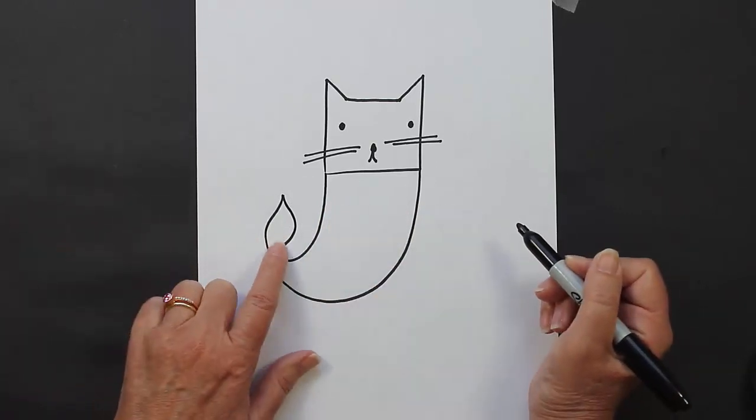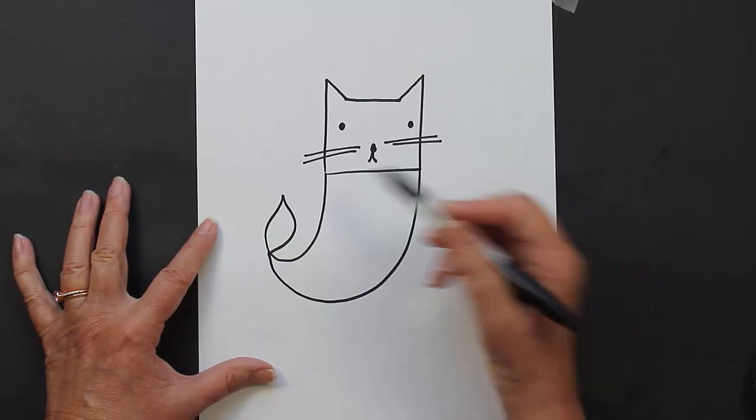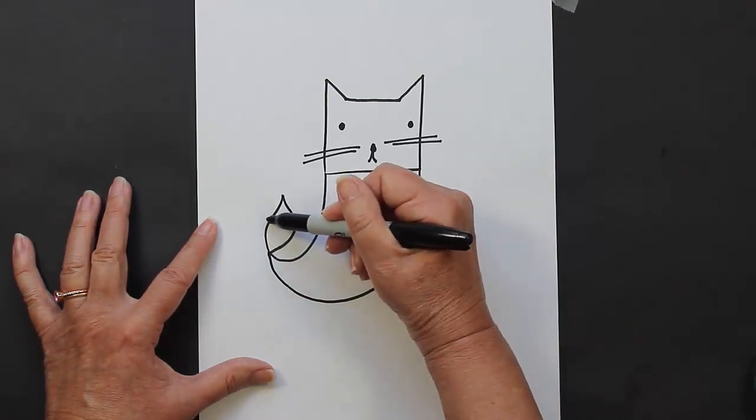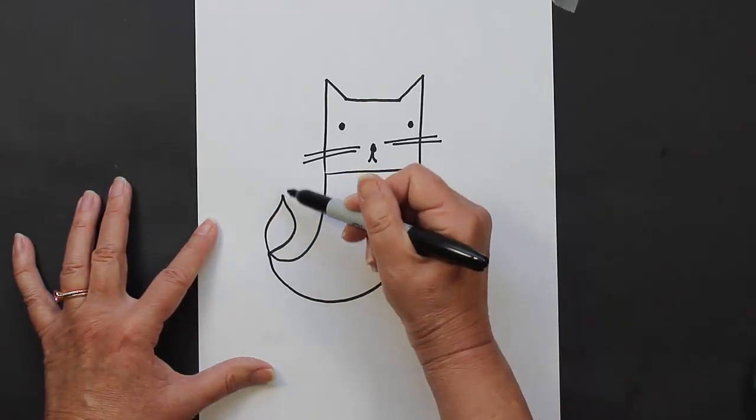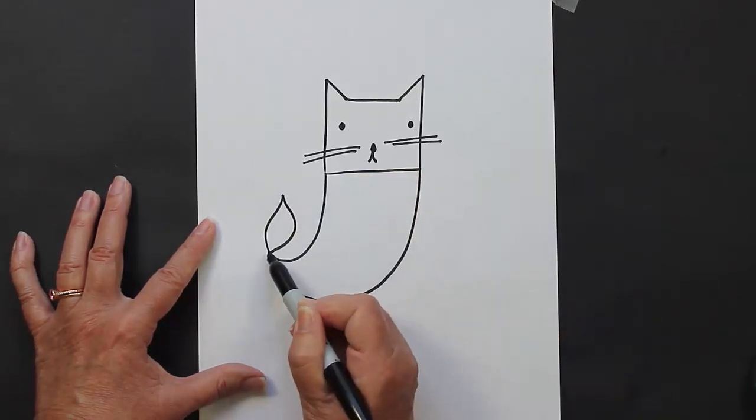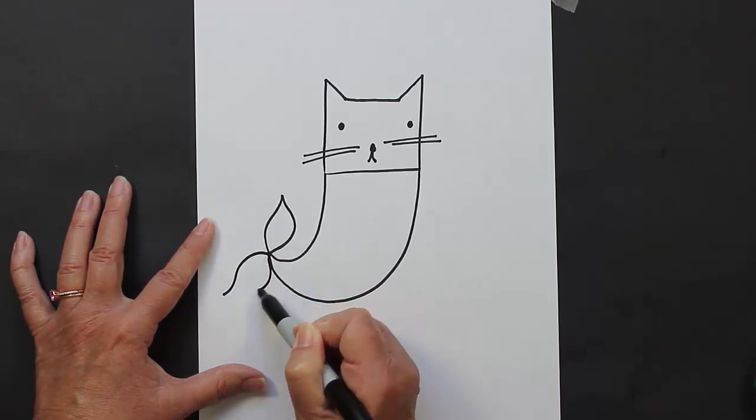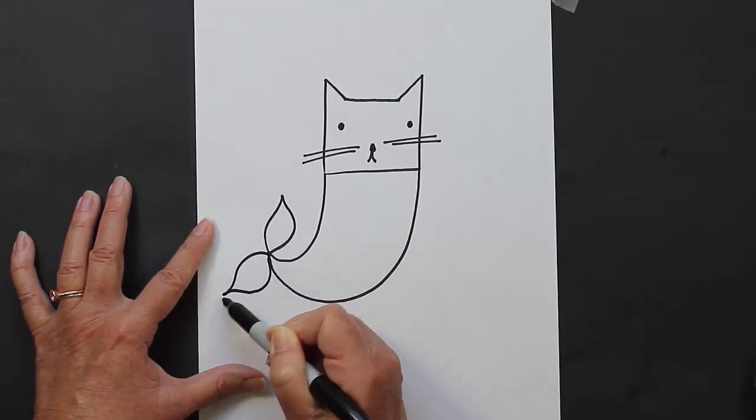This is kind of a tricky shape so you'll want to practice it. Basically you curve up and you curve back in, and then you start at the top, you curve in and you curve back out. So let me show you again: out and in, out and in. You can either go that way or you can come back this way.